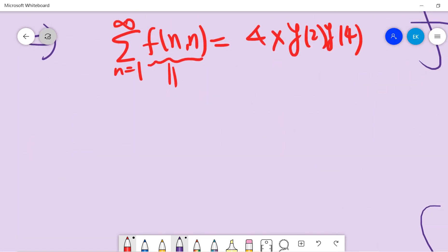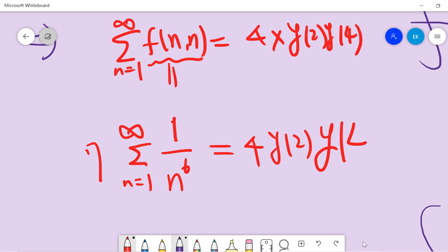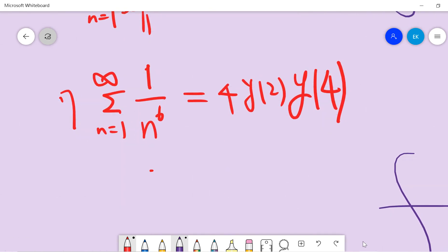Right, so now we have summation n equals 1 to infinity, 1 over n to the 6. There is a 7, right? 7 times zeta 6 equals zeta 2 times zeta 4. So that means to compute this, we have 4 times pi squared over 6 times pi to the 4th over 90, and then divide it by 7.